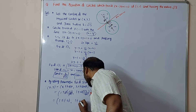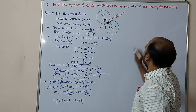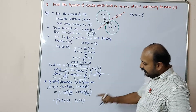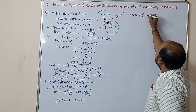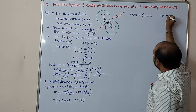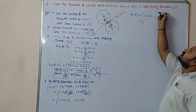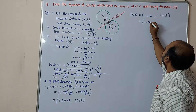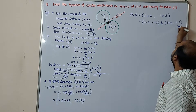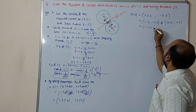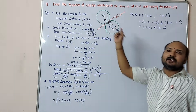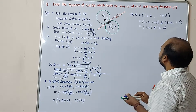Considering the two cases: taking the minus and plus signs gives (1 minus 2, 1 plus 3) and taking plus and minus gives (1 plus 2, 1 minus 3). These evaluate to (minus 1, 4) and (3, minus 2). These are the centers of the two required circles.